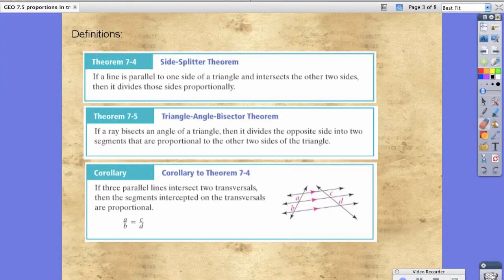And lastly, corollary to Theorem 7.4. It says that if three parallel lines intersect two transversals, then the segments intercepted on the transversals are proportional. So if we look at the image on the right, it's really just saying a divided by b is equal to c divided by d.